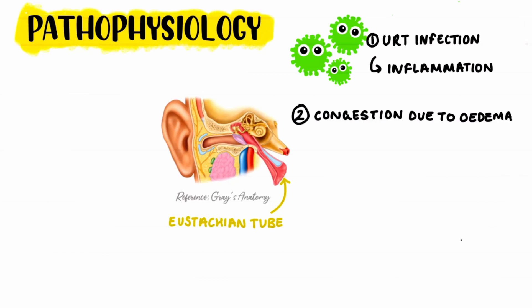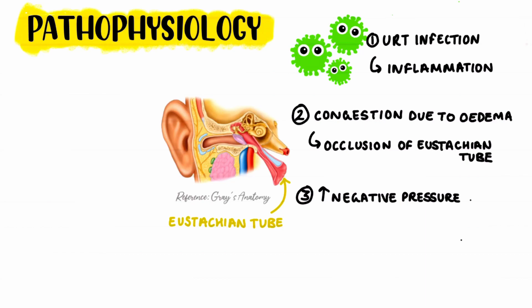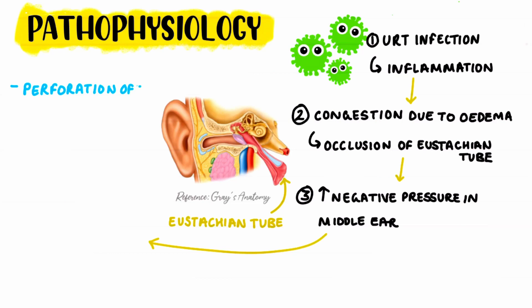This congestion from the inflammation occludes the eustachian tube, causing increased negative pressure within the middle ear. This means that there is no way for the fluid from the inflammation to escape, which results in increased accumulation within the middle ear. This includes how the increased pressure in the middle ear can cause bulging or even perforation of the tympanic membrane. Additionally, the accumulation of fluid can increase the likelihood of further secondary bacterial and viral infections in the middle ear.